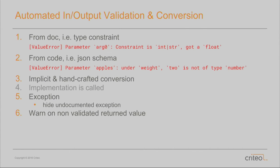Then the real function is called, and from that there can be two outcomes. You can have an exception, and what we do is check that the exception respects the contract. If it doesn't, the content of the exception is hidden, because we don't want the user of the service to see anything not accepted by the contract. And at last, if we get a result from that function call, we validate it based on its type.